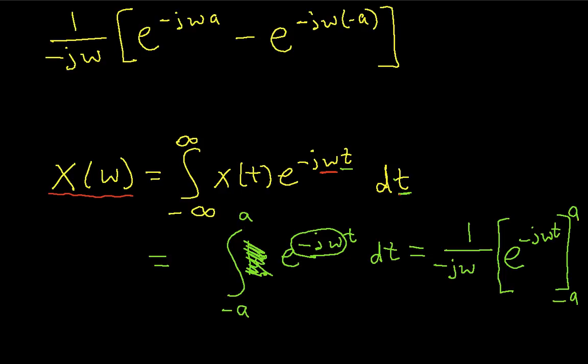Okay. And so now we can do a little bit of just manipulating the algebra here. This negative sign cancels this negative sign, and this negative sign here I can get rid of by putting a negative sign here and a positive sign here. So when I do that, I end up with 1 over j omega, e to the j omega a minus e to the minus j omega a.